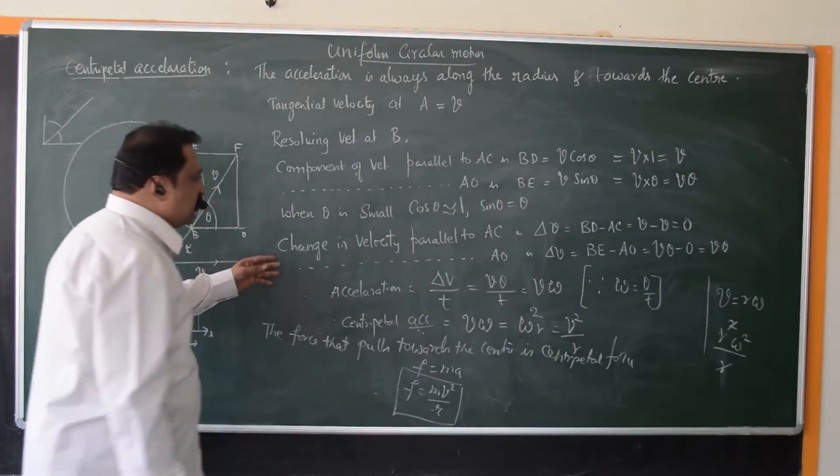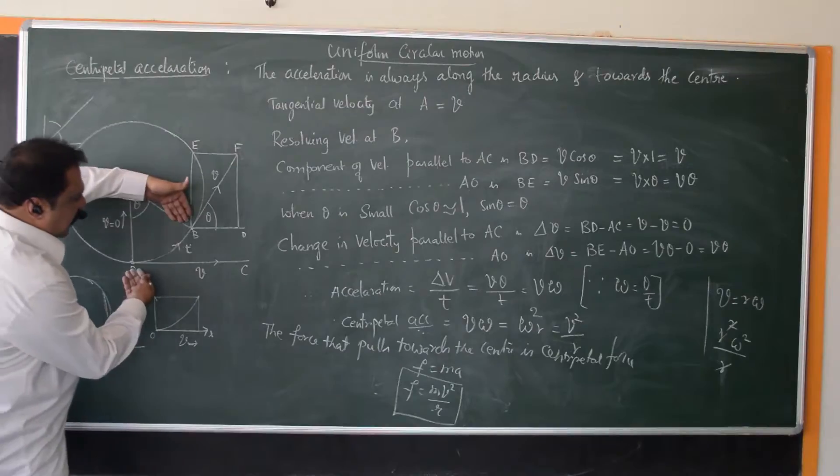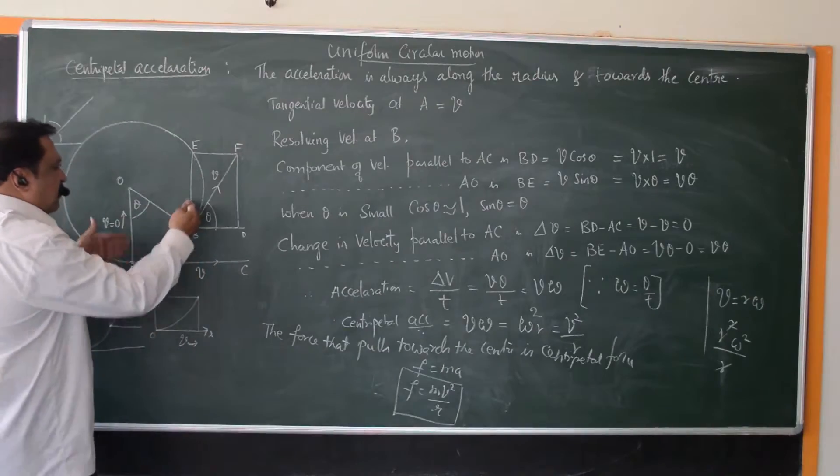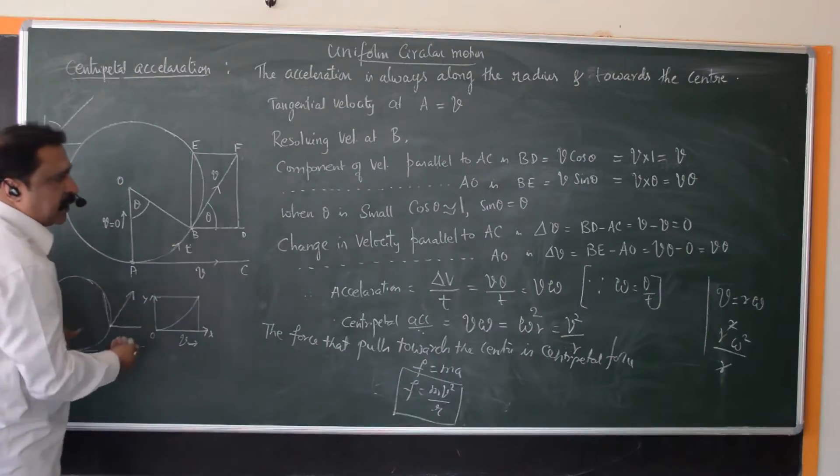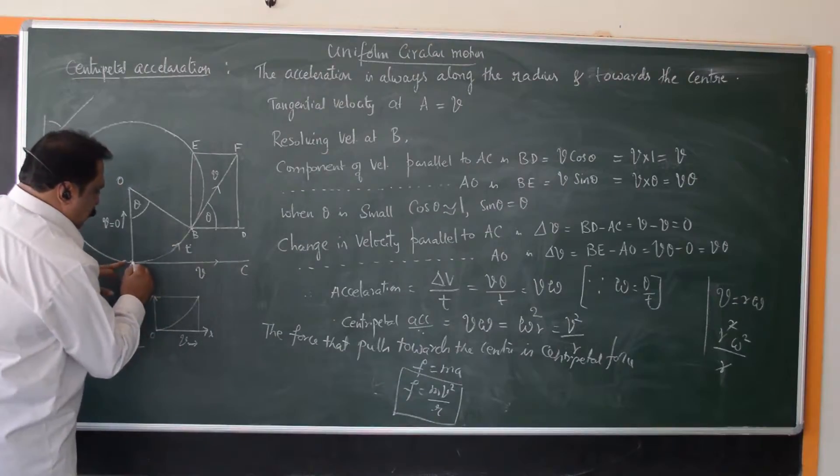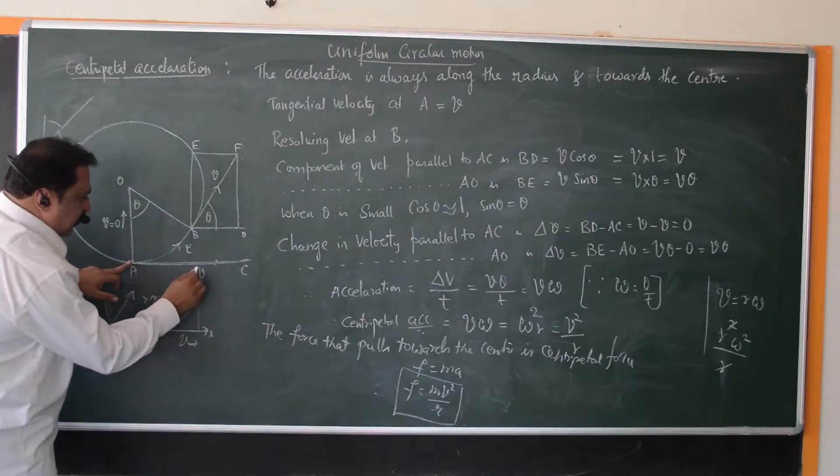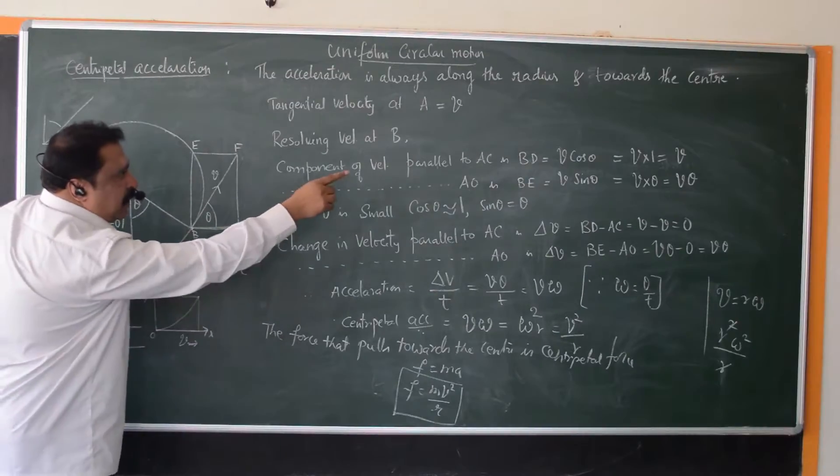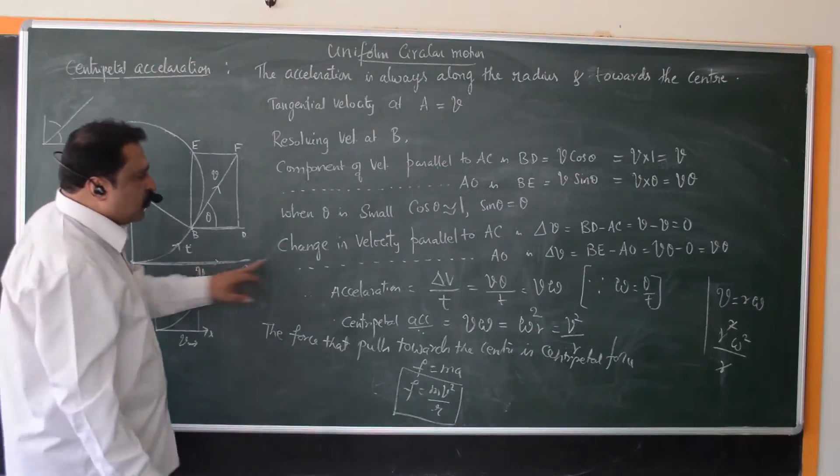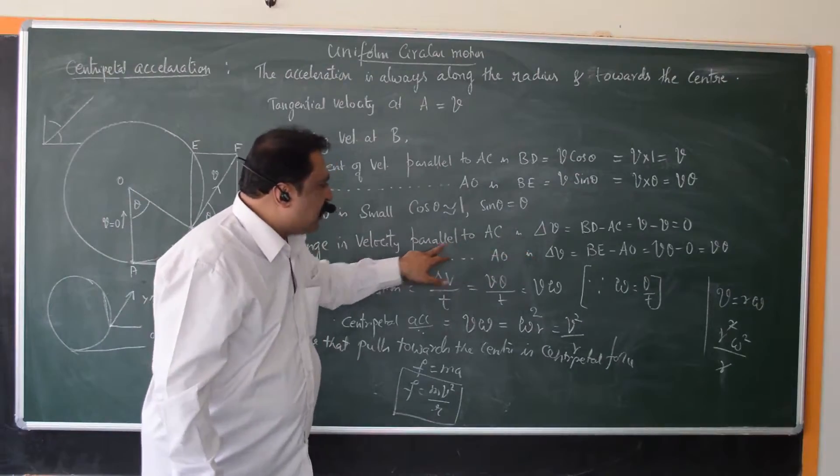Now let's take the change in velocities parallel and later vertically. What is the change in velocity horizontally, that is parallel to AC? At the starting point A, velocity is V. At B, what is BD? What is the numerical value of BD? V. So what is the change in velocity parallel to AC?